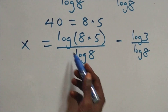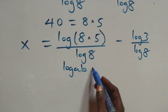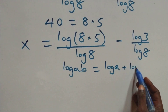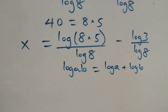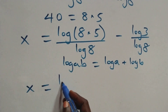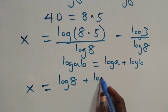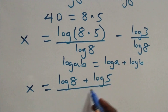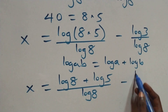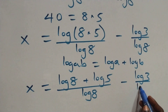This also follows on the law of logarithm: when we have log a times b, which is the same thing as log a plus log b. That is, all we have here becomes x equals to log 8 plus log 5 over log 8, minus log 3 over log 8.